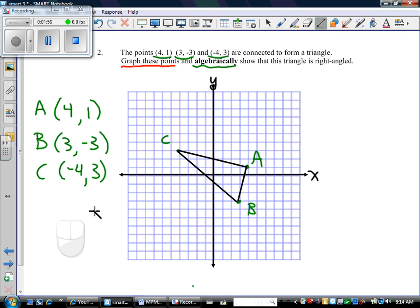So I graphed the points, and now I'm supposed to show that this is a right-angled triangle, algebraically. So when I look carefully at this triangle, it definitely looks like my right angle is probably right here at vertex A. This really doesn't look like a right angle, and this doesn't look like a right angle. So it's probably going to be point A. So how am I supposed to show that it's a right angle algebraically?